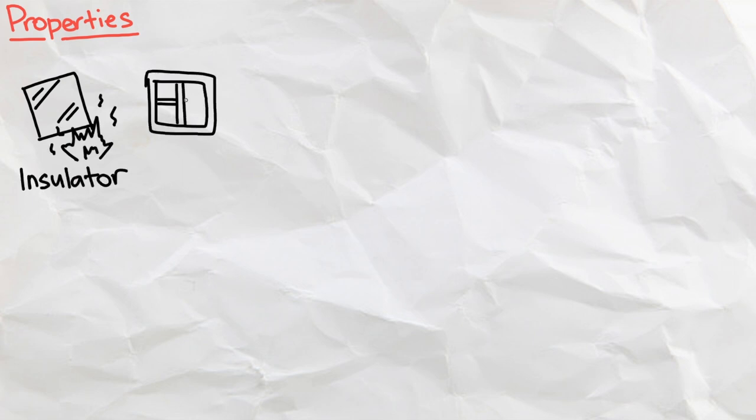Aside from being transparent, there are many properties that make glass an excellent building material. Glass is an excellent insulator, meaning that it retains heat well, making it an ideal material for windows to keep the heat in. It is also inert, meaning that it doesn't react with anything because of how stable silicon dioxide is.